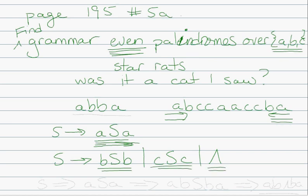For example, if we're trying to derive the string A, B, B, A, we say S goes to ASA, and that goes to A, BSB, A, and that goes to A, B, lambda, B, A. We get rid of the lambda and we end up with the string ABBA that we were trying to derive.